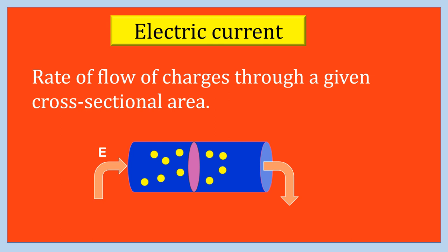Electric current. Electric current could be defined as the rate of flow of charges through a given cross-sectional area. I is equal to dQ by dt.